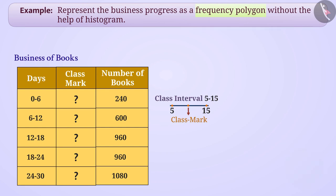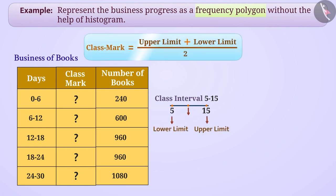Absolutely right! To find the class mark of a class interval, we divide the sum of upper limit and the lower limit of class interval by 2. Like, class mark of class interval 0 to 6 is 3. Similarly, find the class mark of all the class intervals.